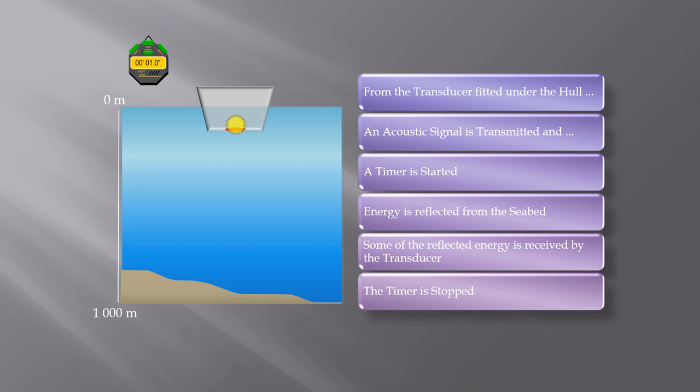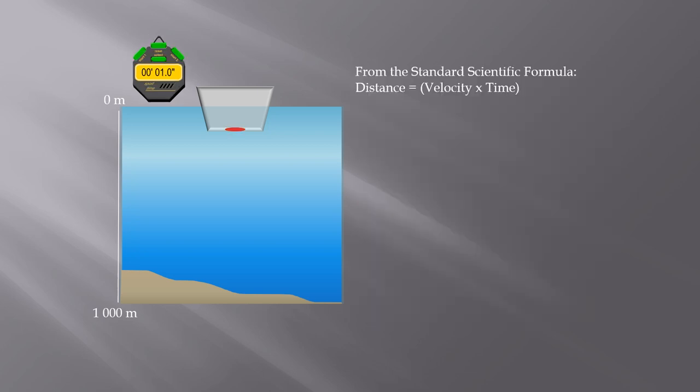Given that the speed of sound in seawater can be determined and is normally somewhere in the range of 1460 to 1540 meters per second, which is averaged out to about 1500 meters per second.